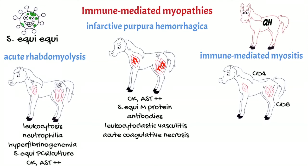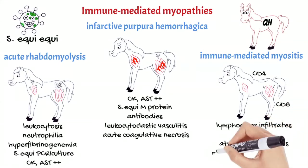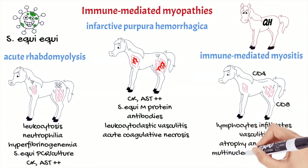Affected horses show acute muscle atrophy with weakness and prolonged recumbency. In acute phases muscle enzymes may be high, but during more chronic stages they are within normal ranges. Muscular biopsies show lymphocyte infiltrates, vasculitis, atrophy and necrosis of muscular fibers, and multinucleated giant cells.